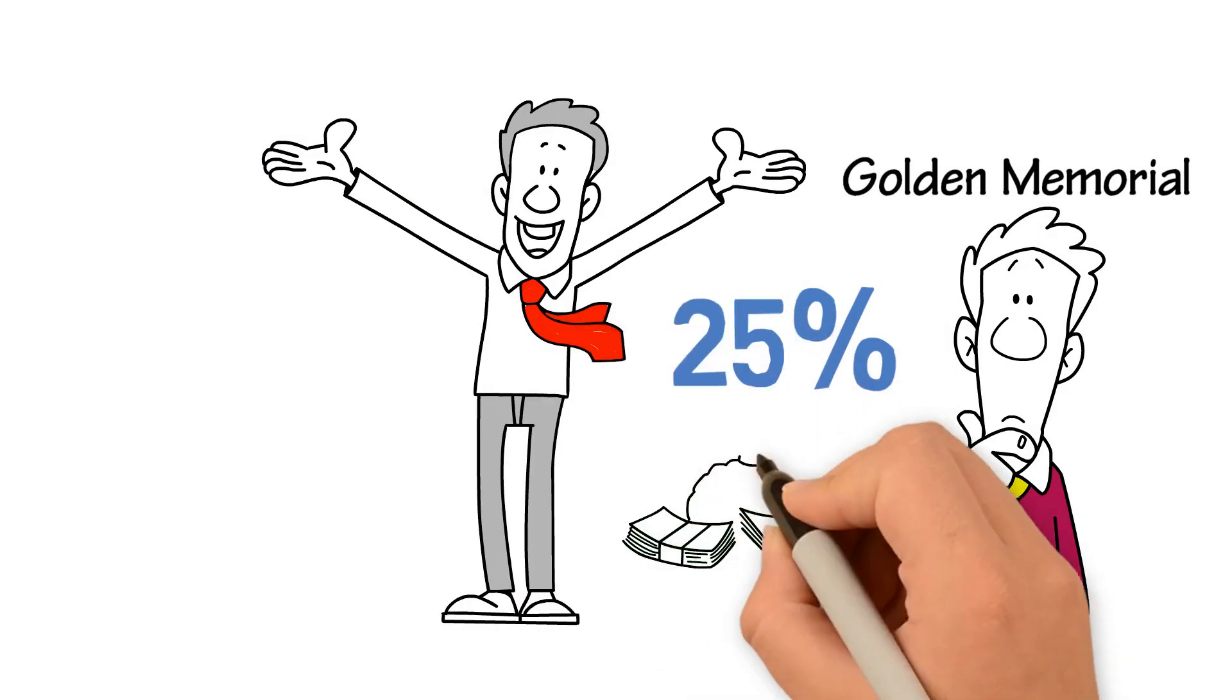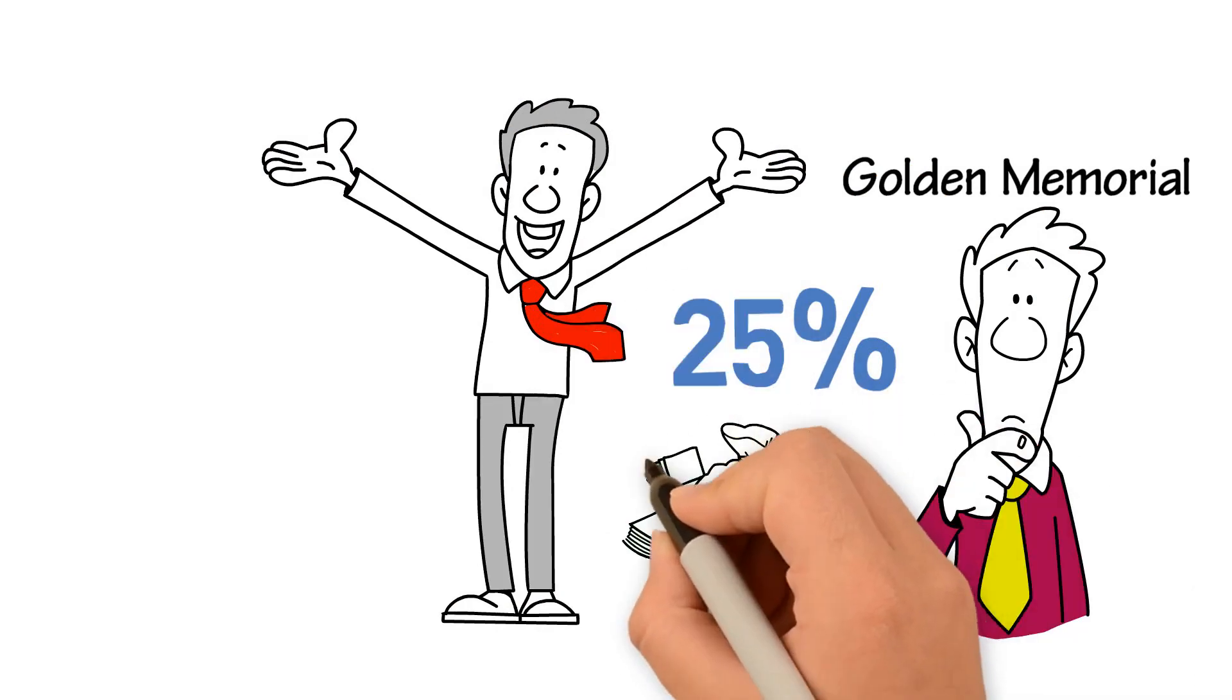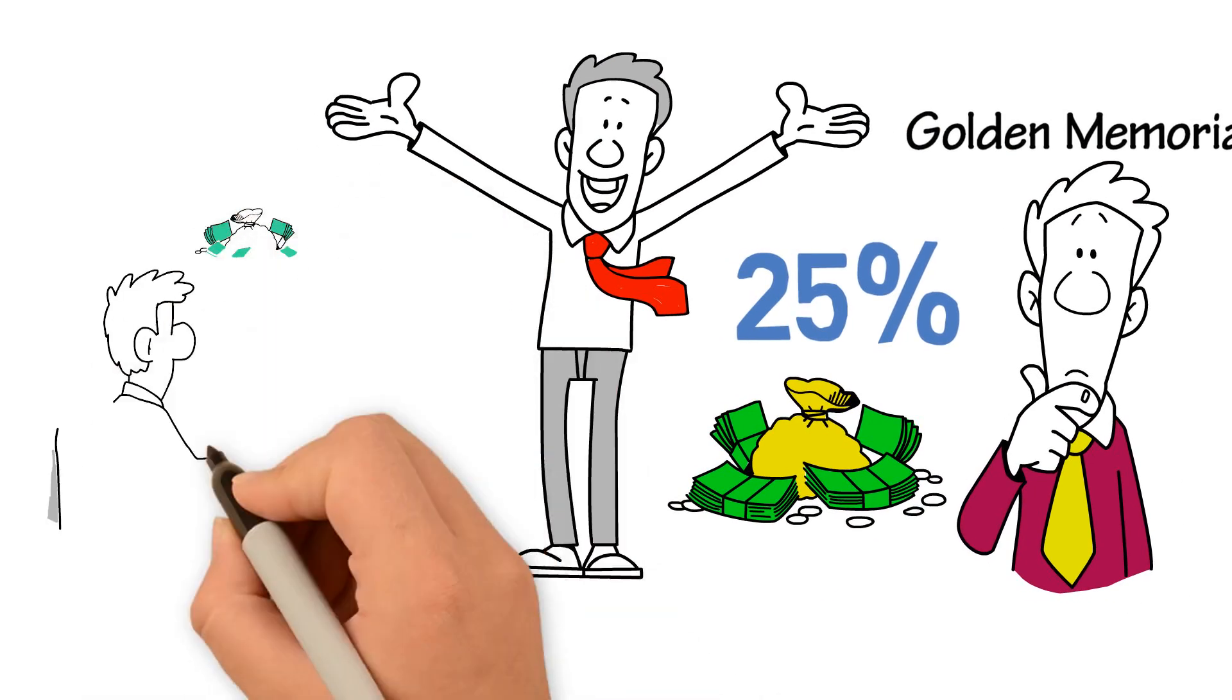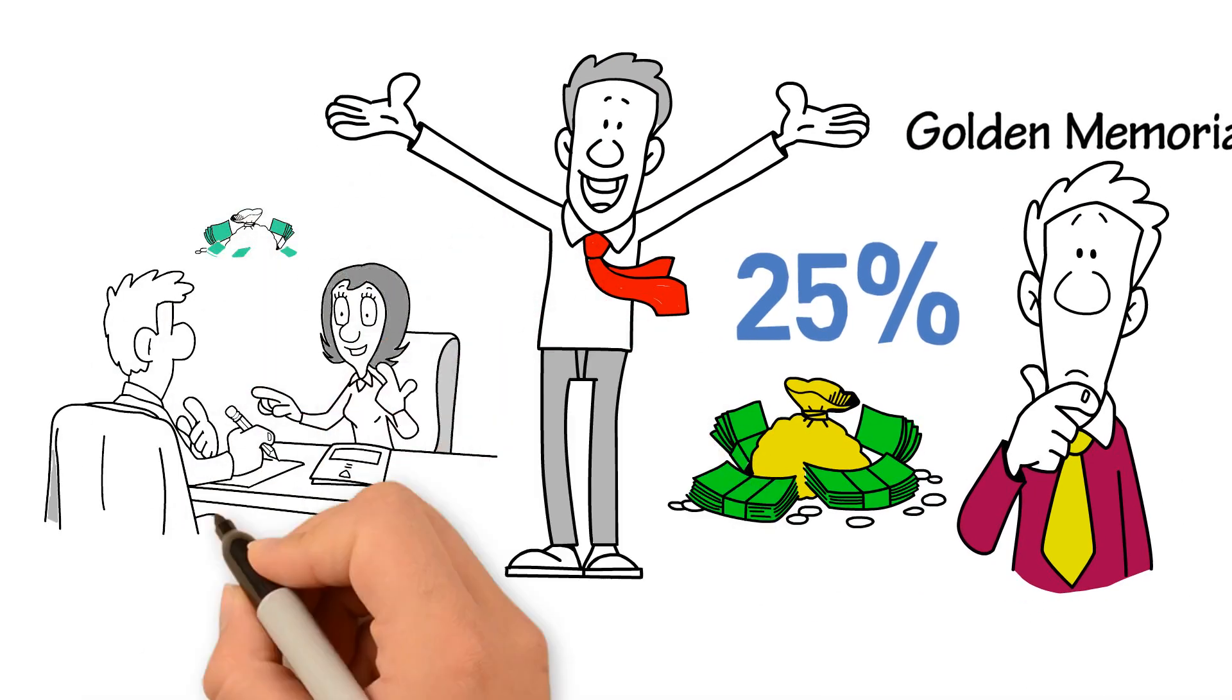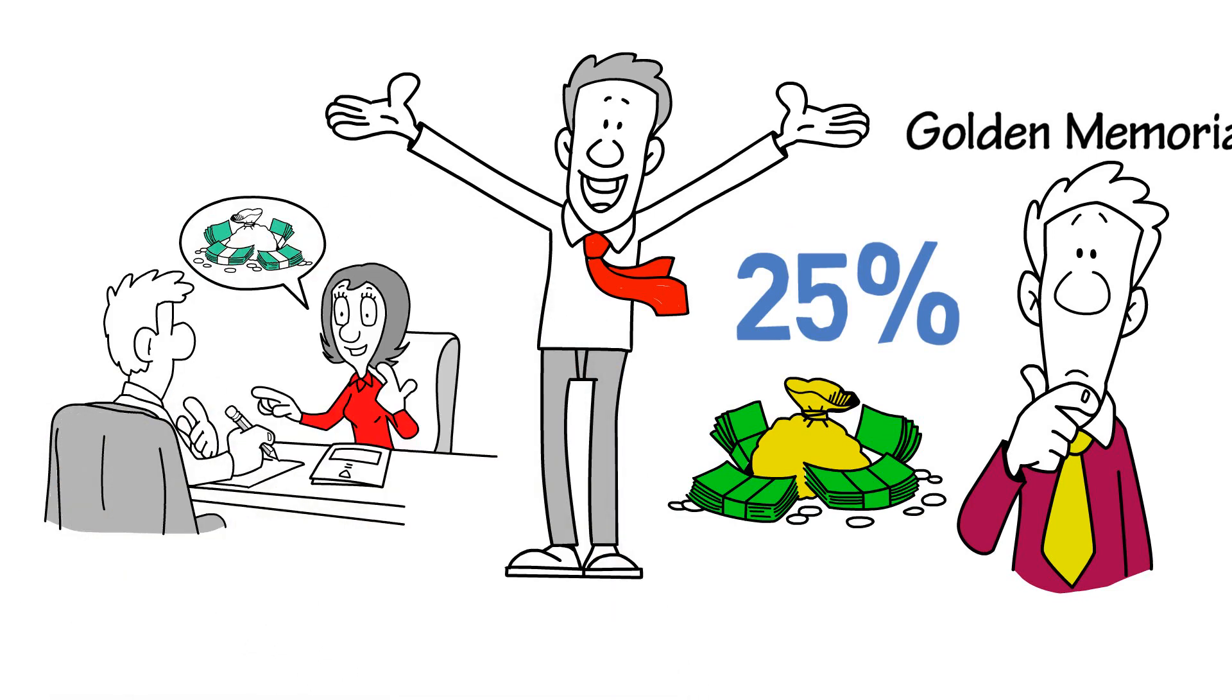You get the remaining 25% paid out to you over the next 12 months, starting with the very next month, which is what we call getting paid as earned. As the client pays their monthly premium, you get paid because you earned it, which is why we call it as earned.